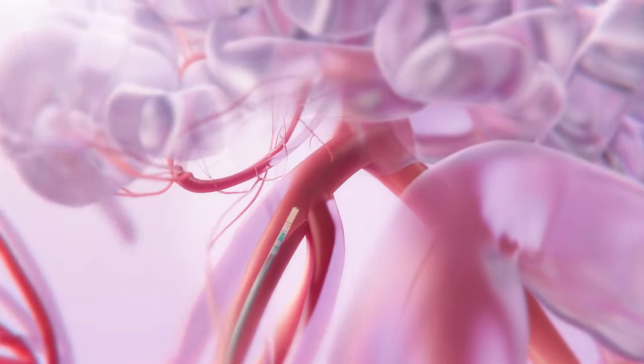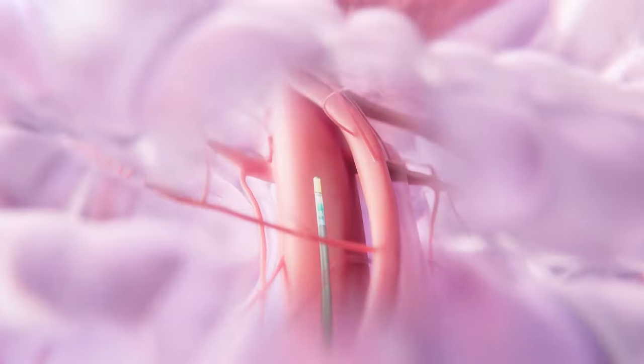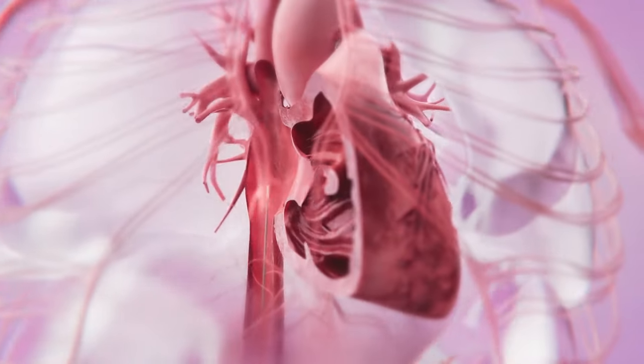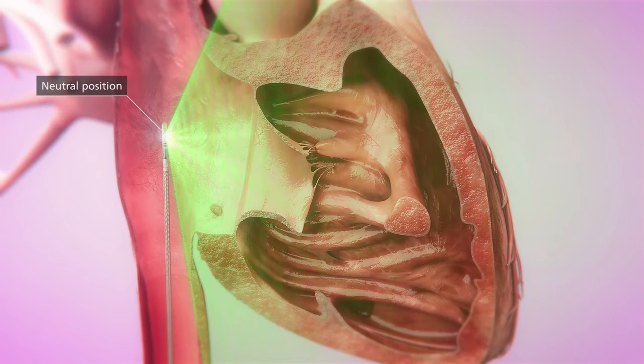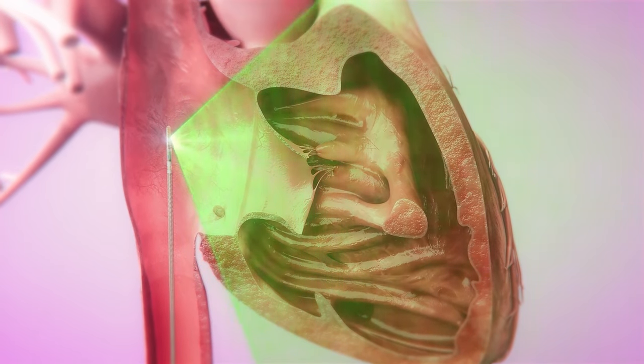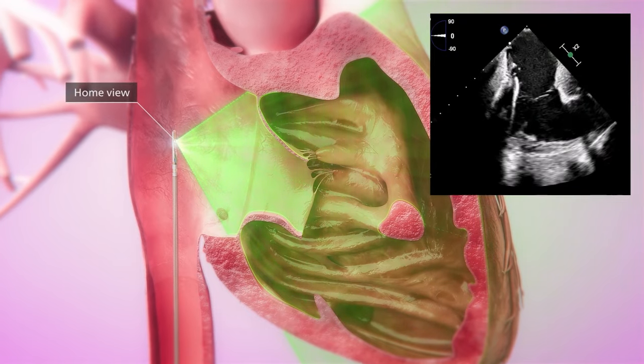When the Verisight Pro 3D ICE catheter enters the body with the clutch knob facing the ceiling, the imaging sector will be in neutral position. A slight clockwise adjustment will visualize the home view.